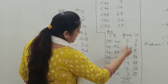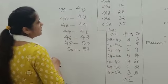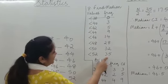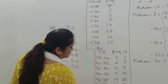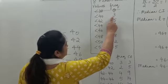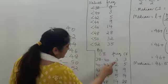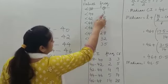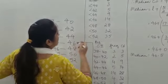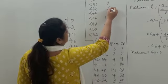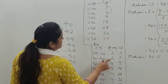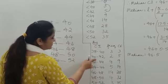Next we need to find the values in the frequency column. Remember, the given values are cumulative frequencies, not individual frequencies, so we need to generate the actual frequencies. Write the first cumulative frequency value, 3, as it is — so 3 is the frequency of the first class interval. Then find the difference between consecutive cumulative frequencies: 5 minus 3 equals 2, so 2 is the frequency of the next class interval.